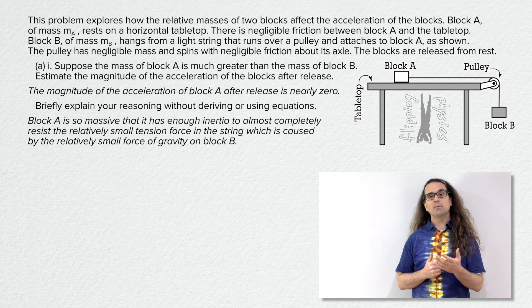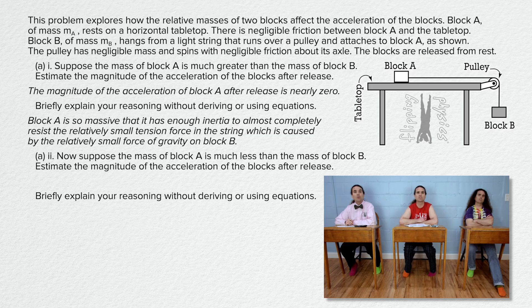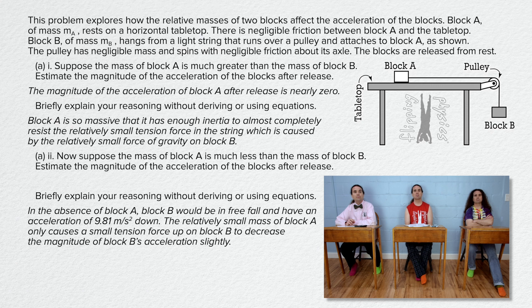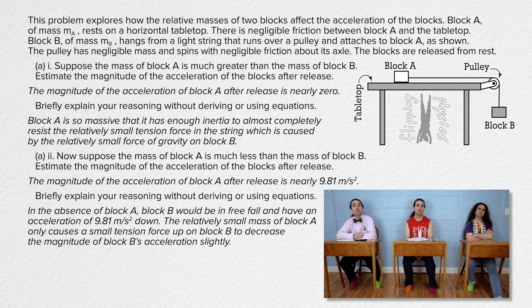Bobby, please read and answer part A double-I. Now, suppose the mass of block A is much less than the mass of block B. Estimate the magnitude of the acceleration of the blocks after release, and briefly explain your reasoning without deriving or using equations. Because this is the quantitative qualitative translation question, I like starting with the explanation. In the absence of block A, block B would be in free fall and have an acceleration of 9.81 meters per second squared down. The relatively small mass of block A only causes a small tension force up on block B to decrease the magnitude of block B's acceleration slightly. Therefore, my estimate is that the magnitude of the acceleration is nearly 9.81 meters per second squared.